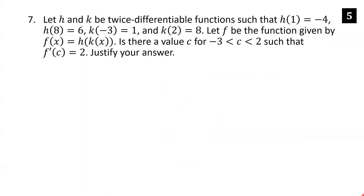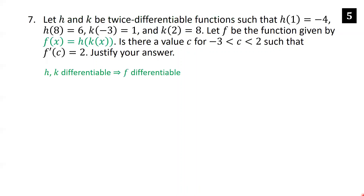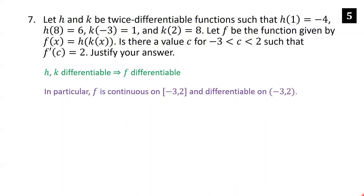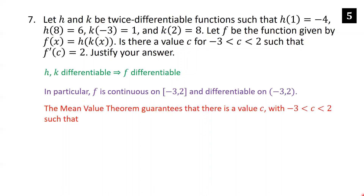Let h and k be twice differentiable functions such that h(1) equals negative 4, h(8) equals 6, k(negative 3) equals 1, and k(2) equals 8. Let f(x) equals h(k(x)). Is there a value c between negative 3 and 2 such that f prime of c equals 2? Since h and k are twice differentiable, they're certainly differentiable, so f is differentiable — the composition of differentiable functions is differentiable. Since f is differentiable, it's continuous on the closed interval [negative 3, 2] and differentiable on the open interval, so the Mean Value Theorem applies.